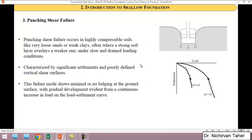The third and final shear failure of the soil is called punching shear failure. This type of failure happens in very high compressible soils like very loose sands or weak clays, and sometimes where a very strong soil layer overlays a weak one, under slow and drained loading conditions.